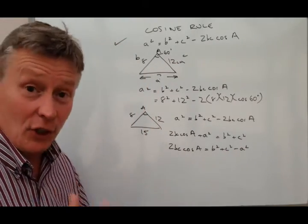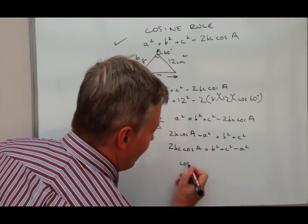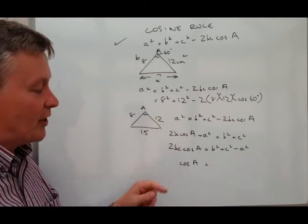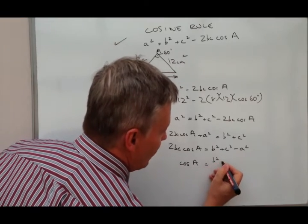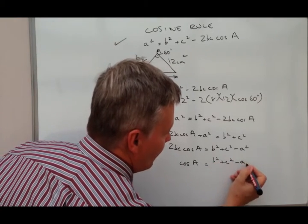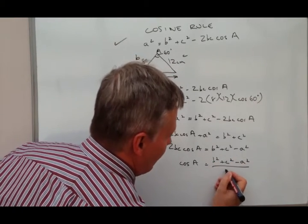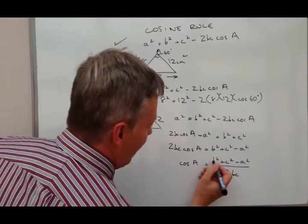And then to get the value of cosine A, I'm just going to divide both sides by 2BC. So I get cosine A equals B squared plus C squared minus A squared all over 2BC.